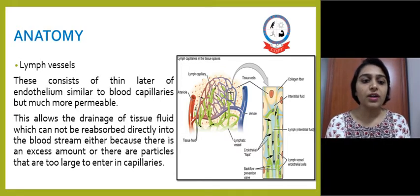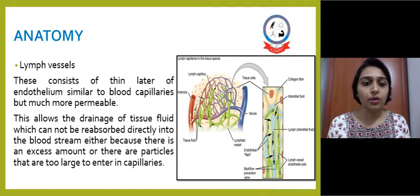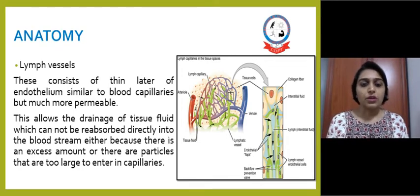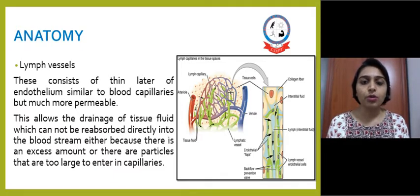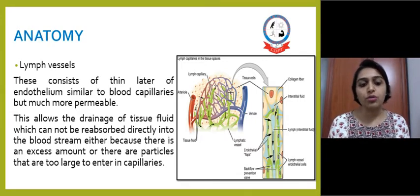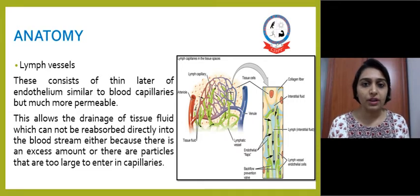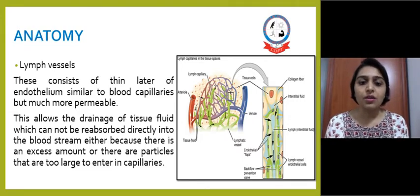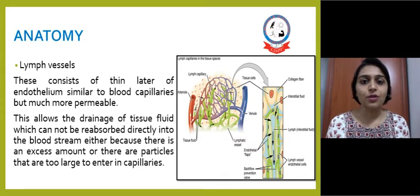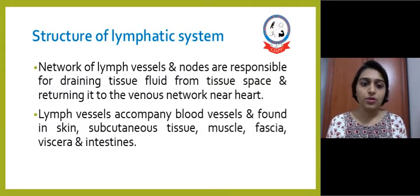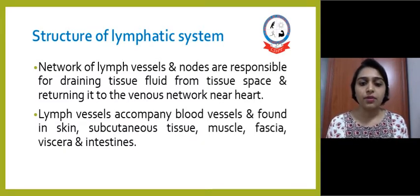The lymphatic vessels consist of a thin layer of endothelium, similar to blood capillaries, but much more permeable. This allows drainage of tissue fluids which cannot be reabsorbed directly into the bloodstream, either because there is an excess amount or there are particles too large to enter the capillaries. The lymphatic system draws those protein particles that venules cannot take back and drains them into the veins. The lymph vessels and nodes are responsible for draining tissue fluid from tissue space and returning it to the venous network near the heart.